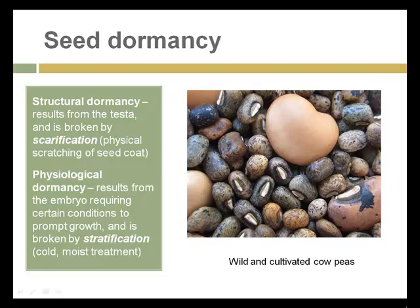There are two types of dormancy. The first is structural dormancy, which results from the seed coat. The seed coat needs to imbibe water and in some cases needs to be broken to start the germination process. A technique I demonstrate in my video is scarification — the physical scratching of the seed coat to start germination.